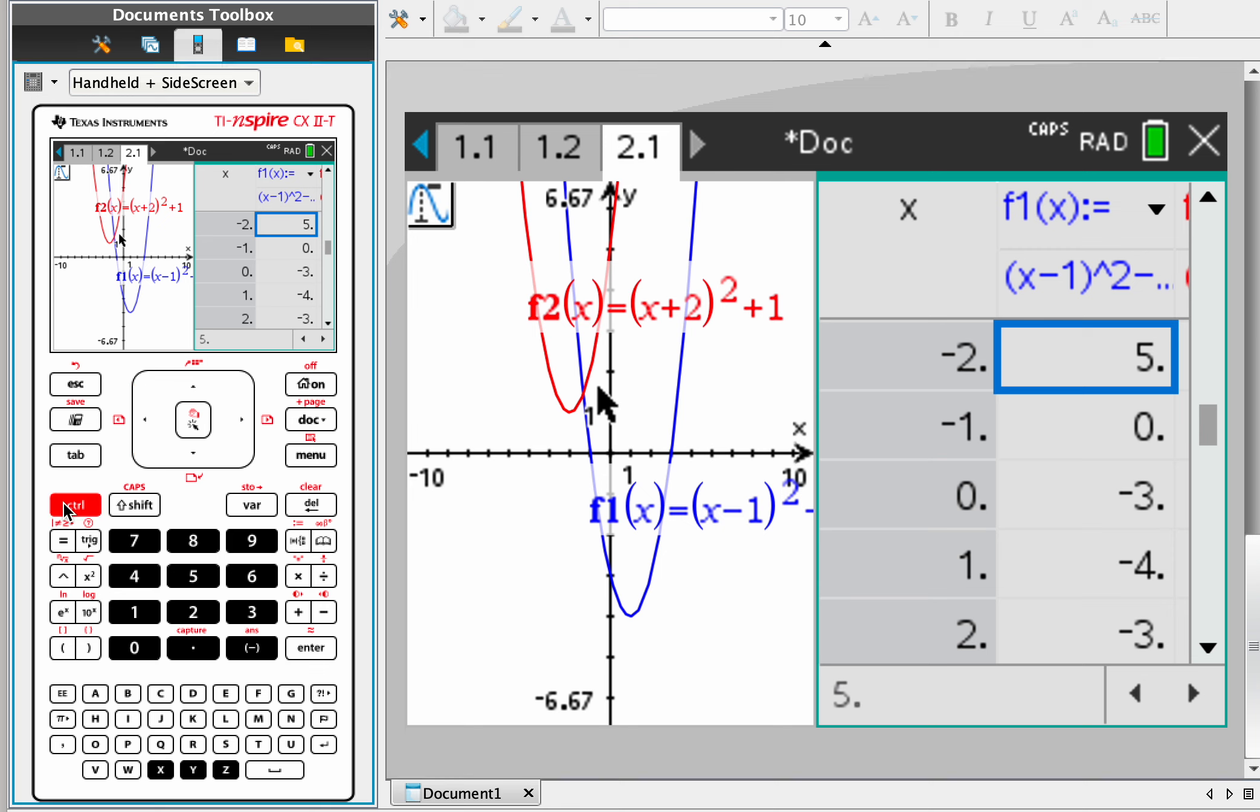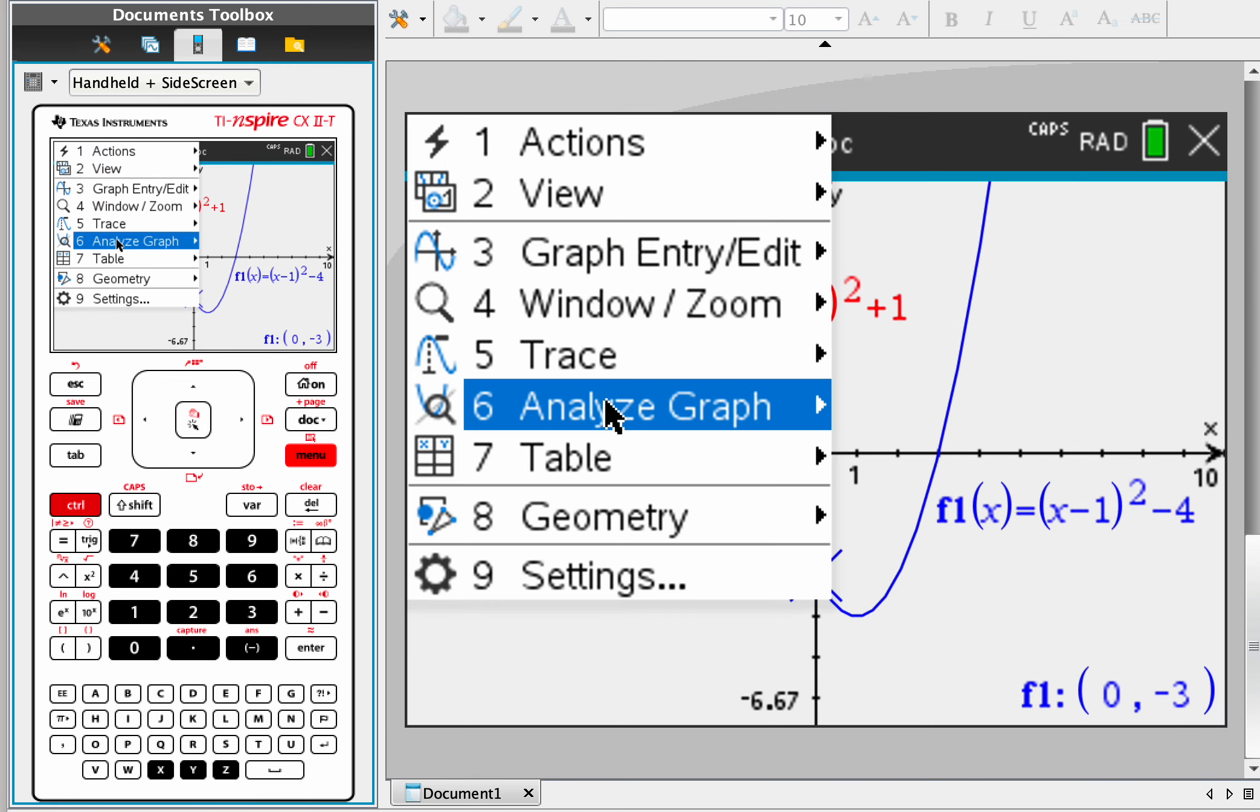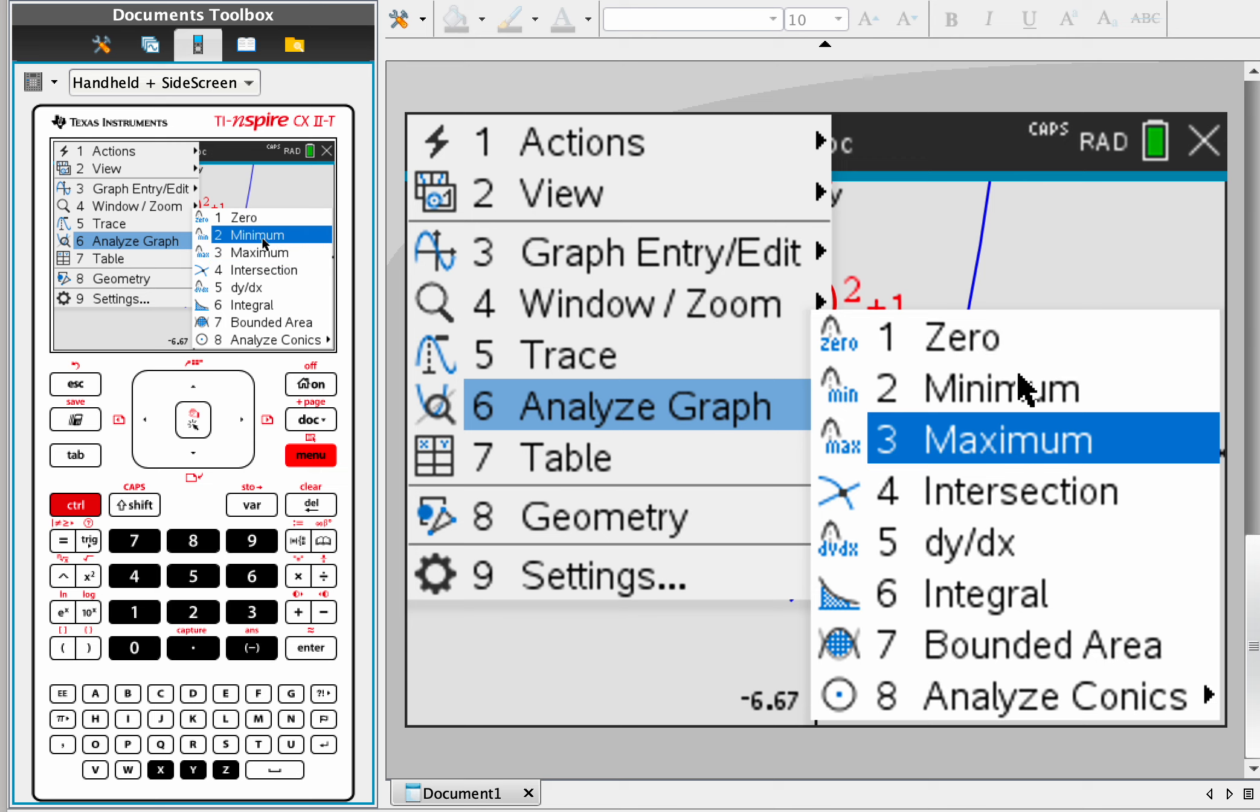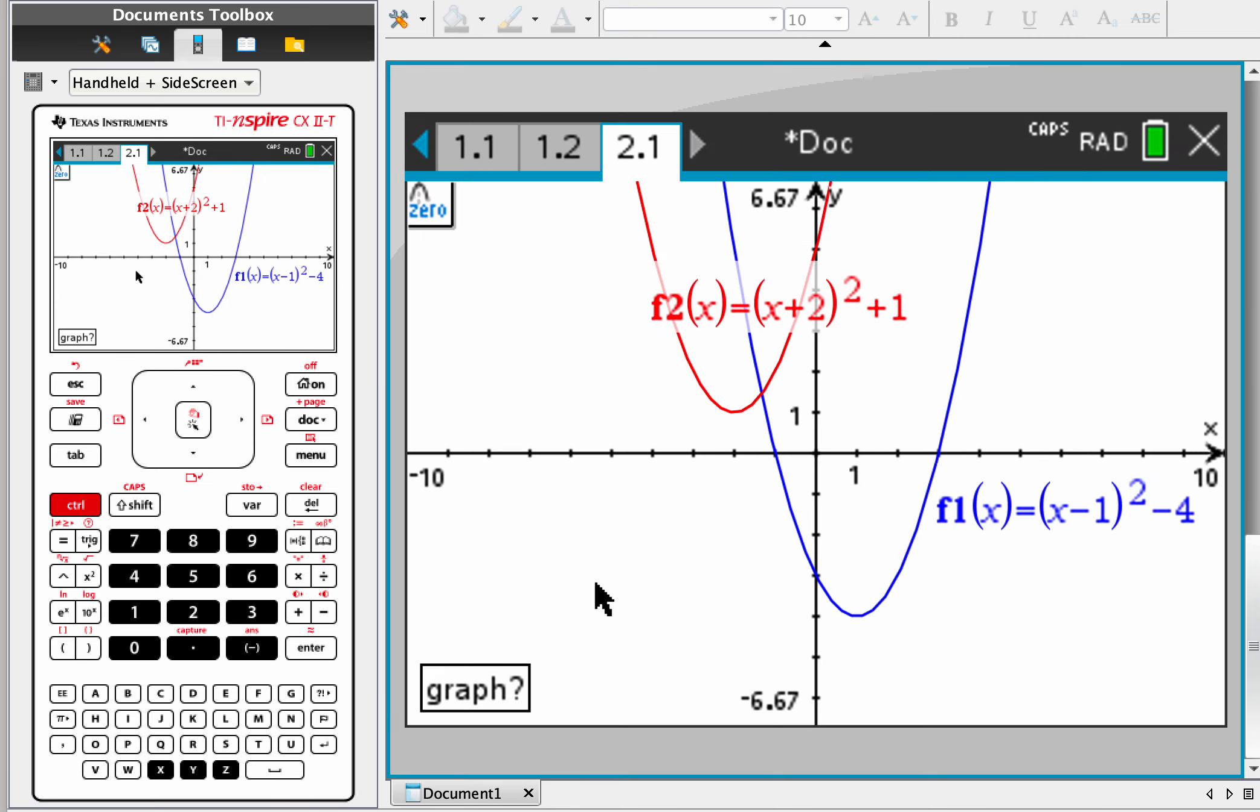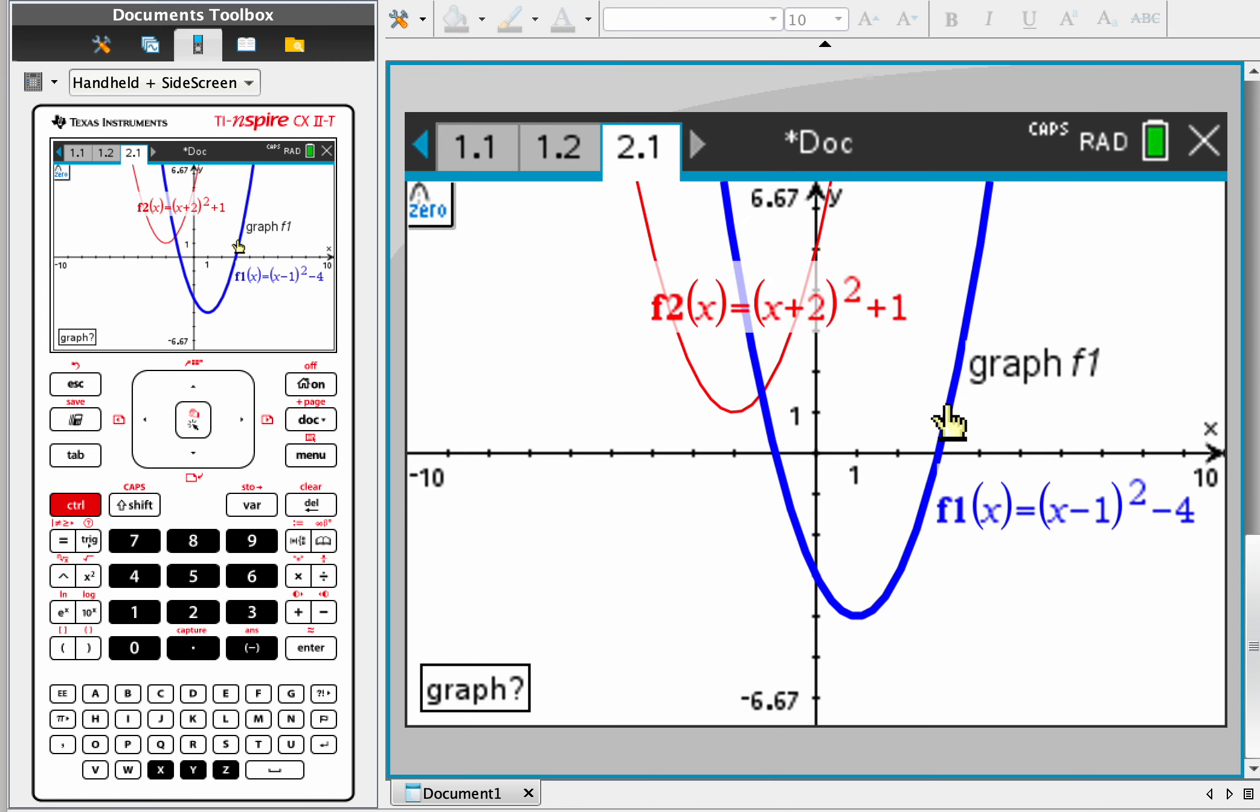All right, so let's get rid of this for now. We have to find the x intercept, so menu, analyze graph, zeros of the function. Which graph? Well you have to pick, because it doesn't know if you want the red or blue. Let's try the red. Well there's no x intercepts here, so it's not going to work. So let's try that again with the other one, the blue one.